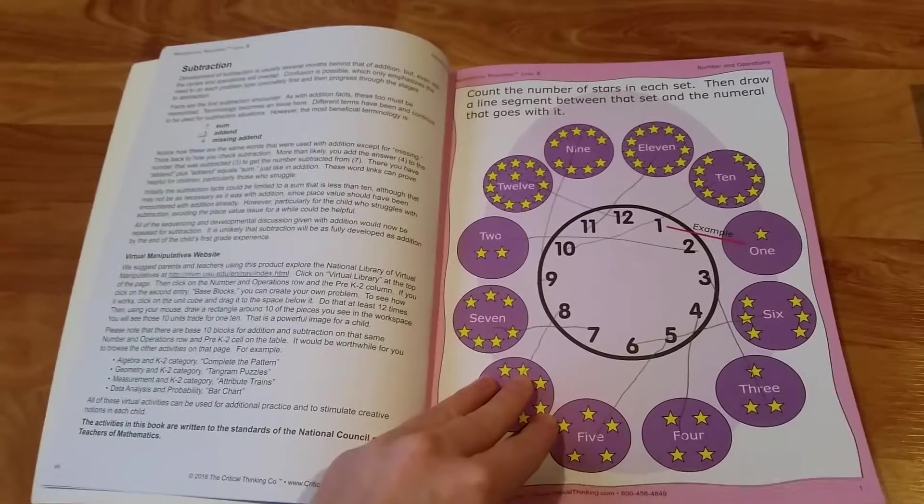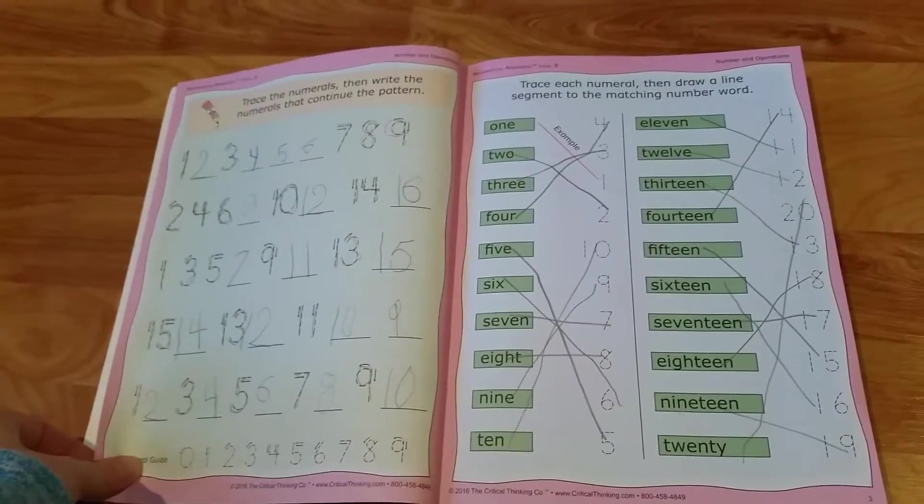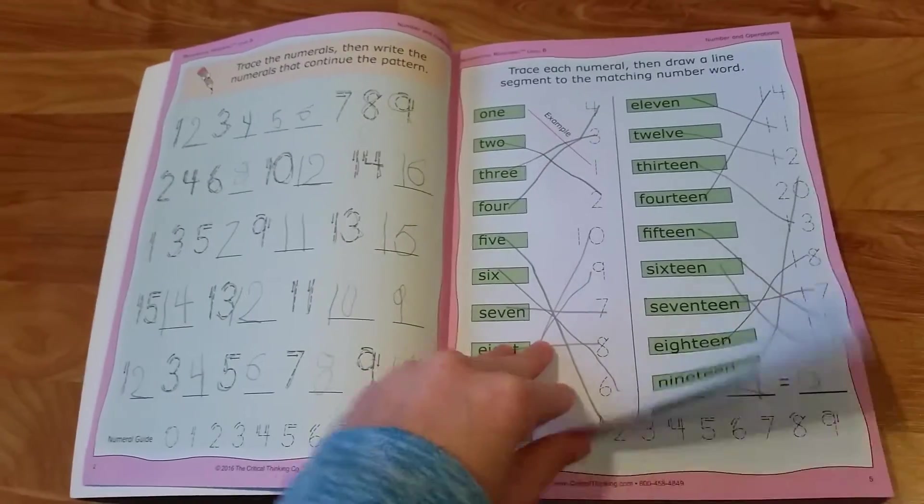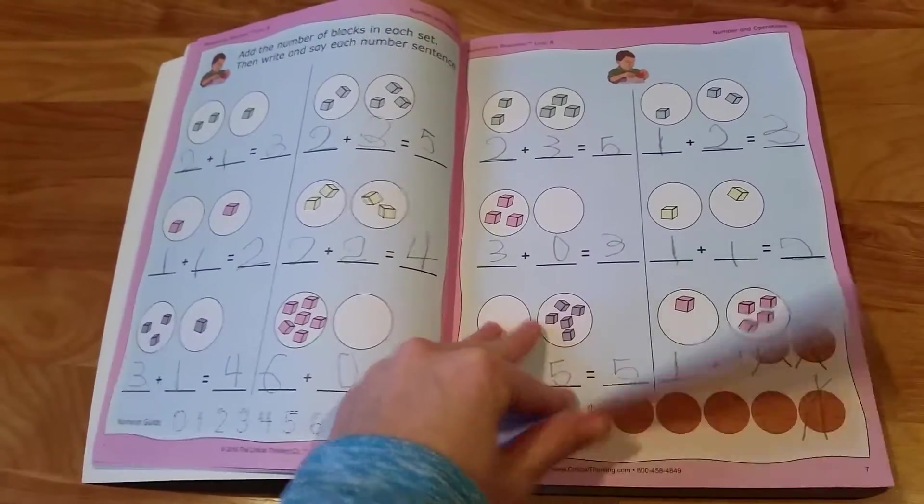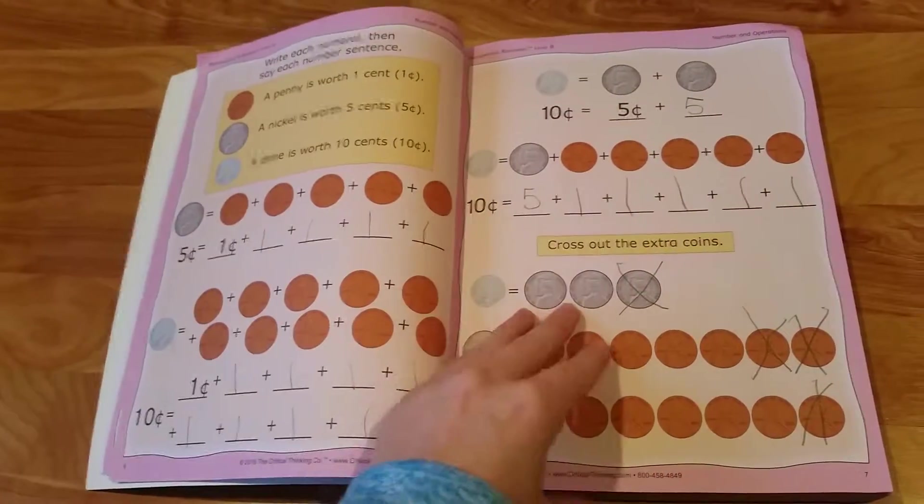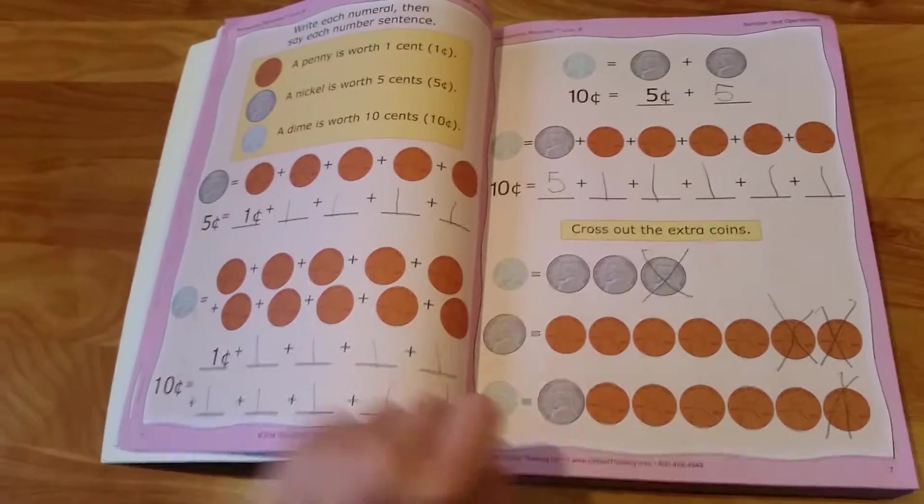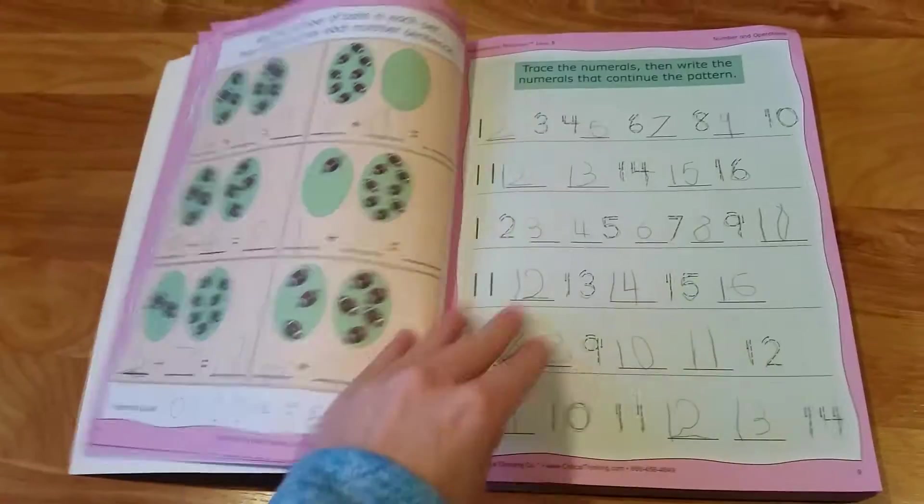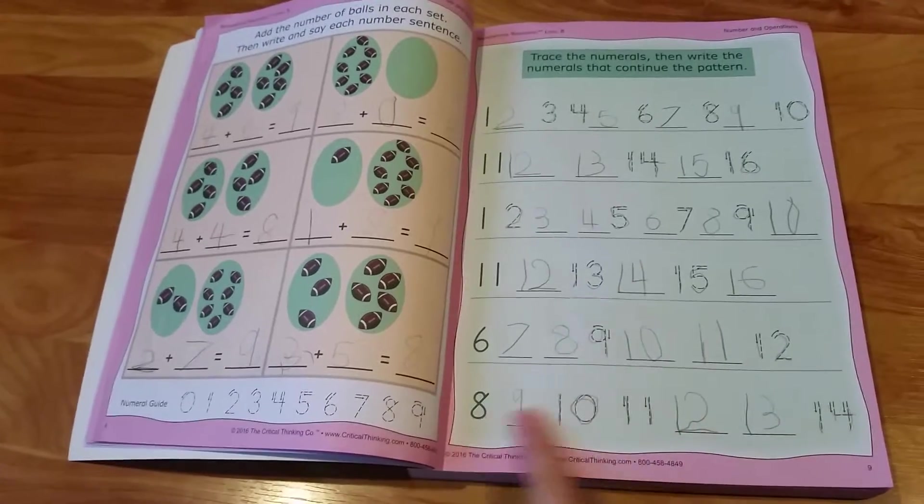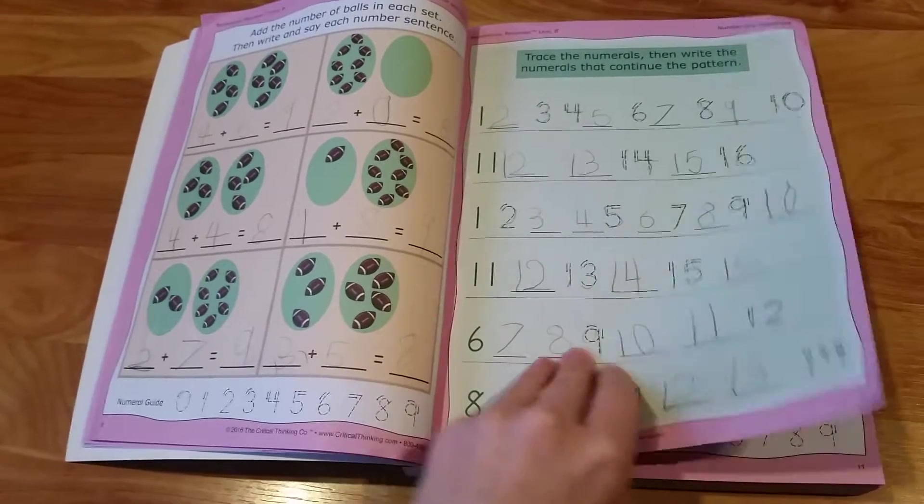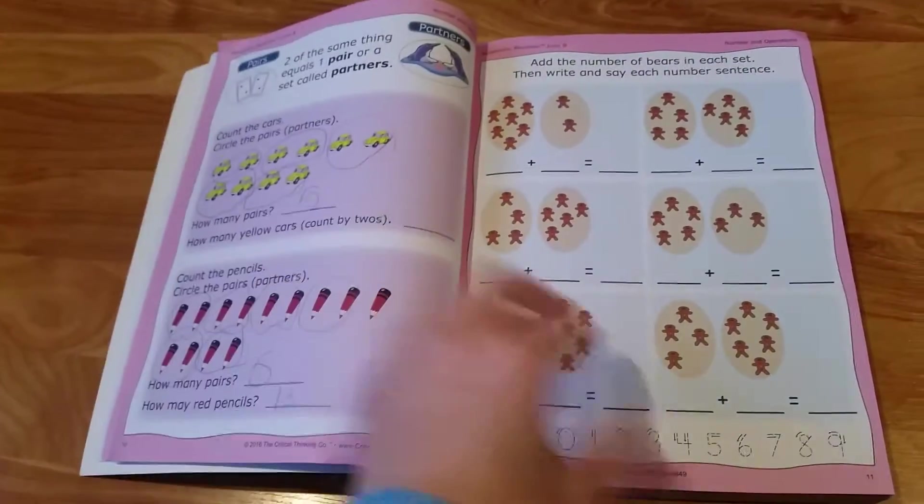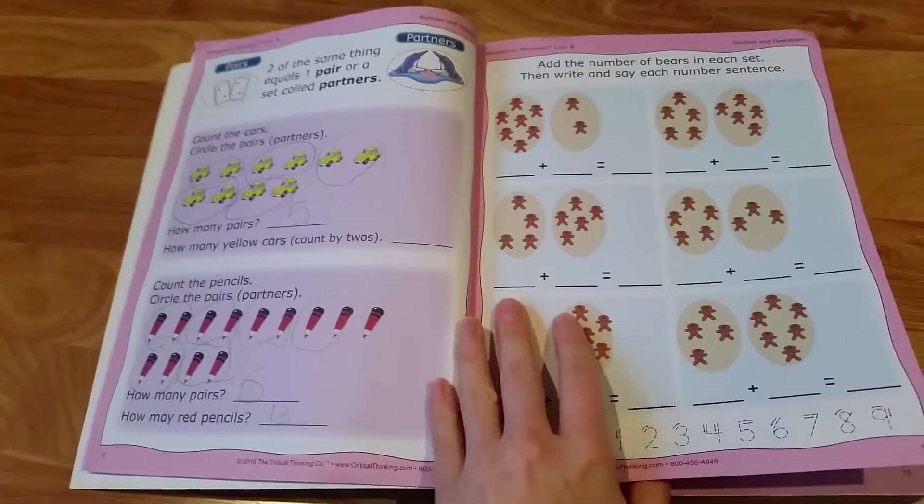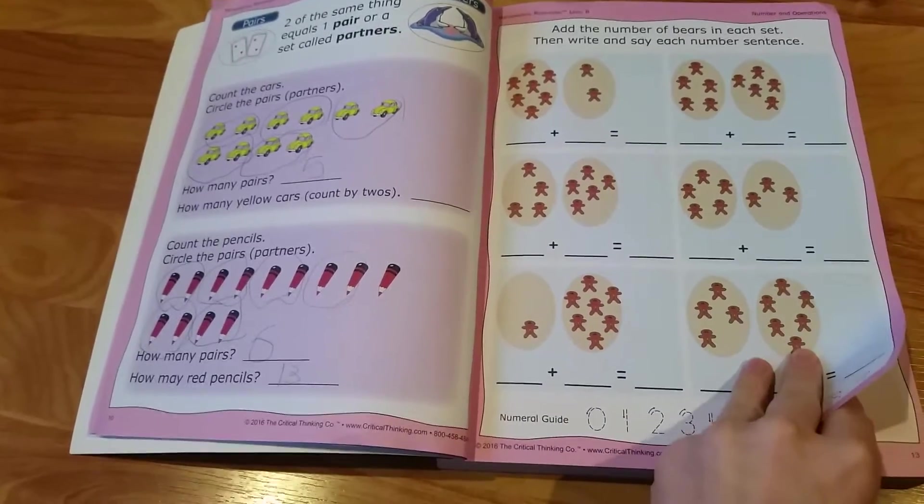There's some fun review at the beginning: filling in the number patterns, matching to the number word, counting the blocks and adding them. Coins activities, like this one showing that a nickel is the same as five pennies. It does have some reviews with more filling in the missing numbers in those number patterns.